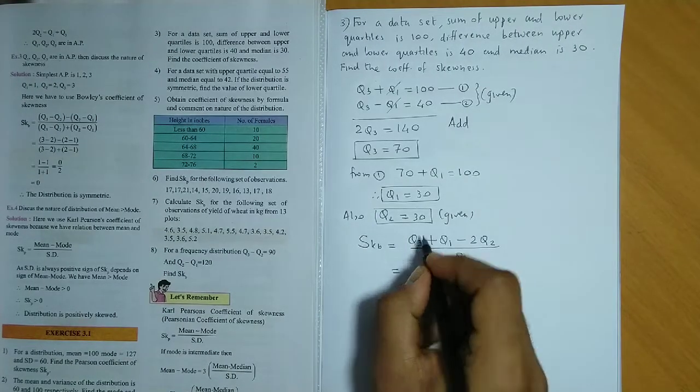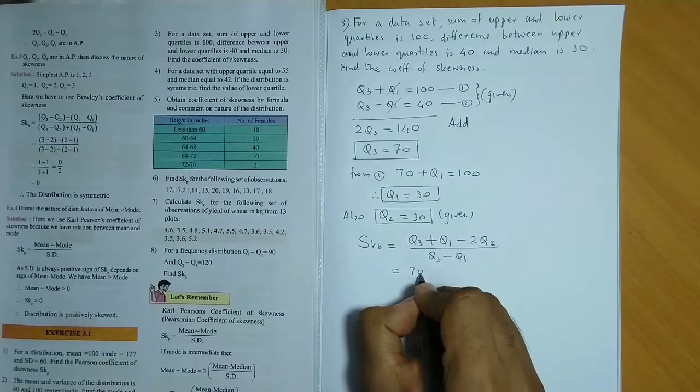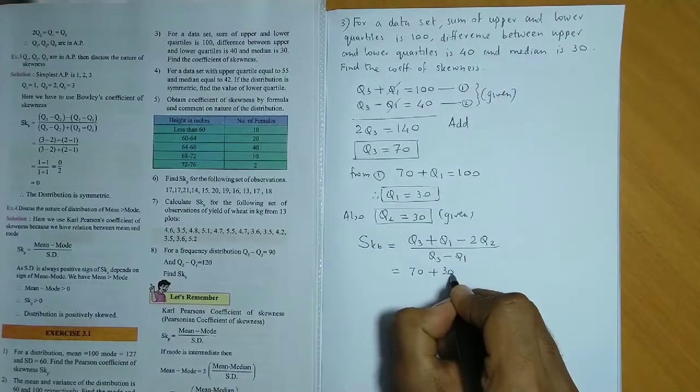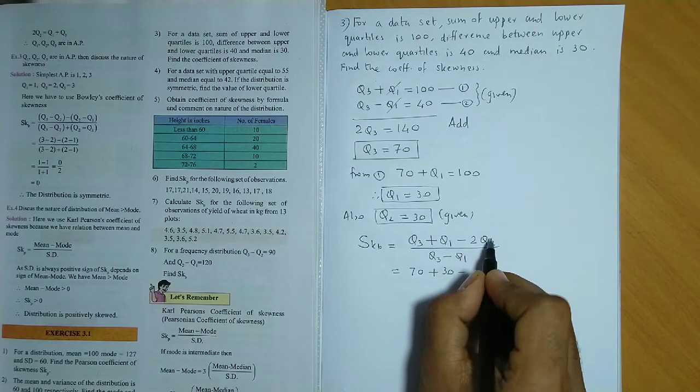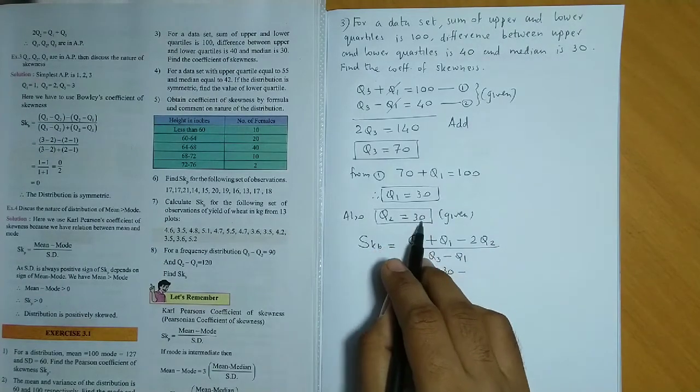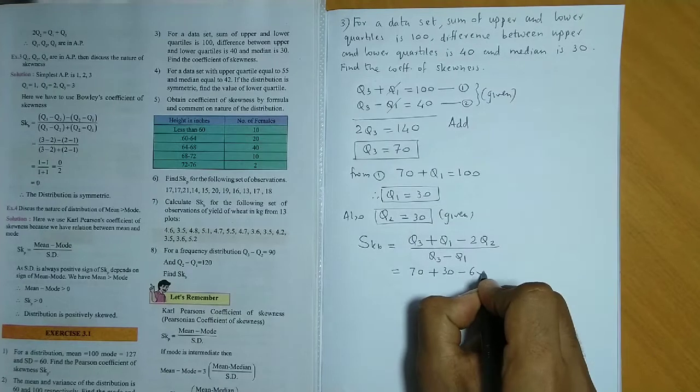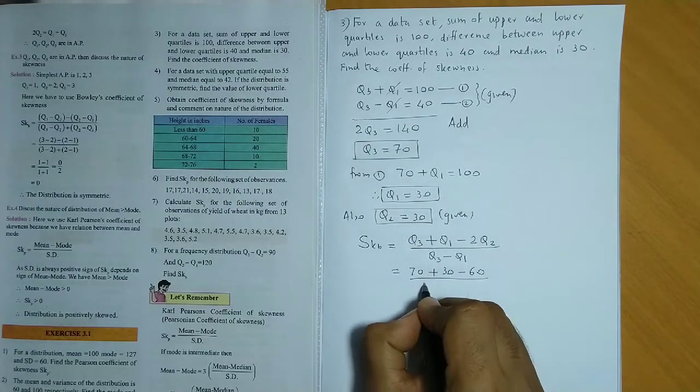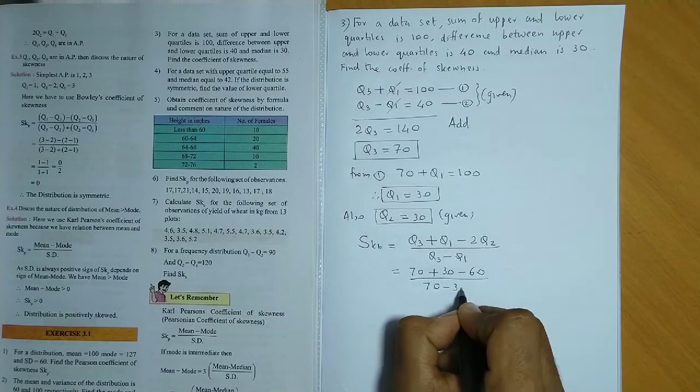Now we substitute Q3, Q3 is 70 plus Q1, Q1 is 30. 2 times Q2, Q2 is 30, it is 2 times 60 divided by Q3 minus Q1, that is 70 minus 30.